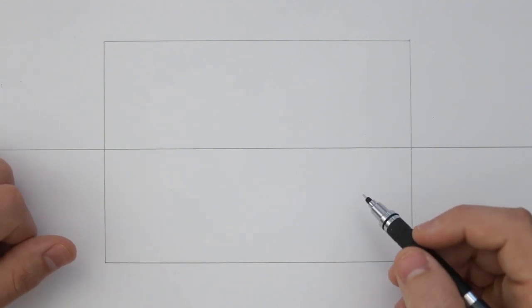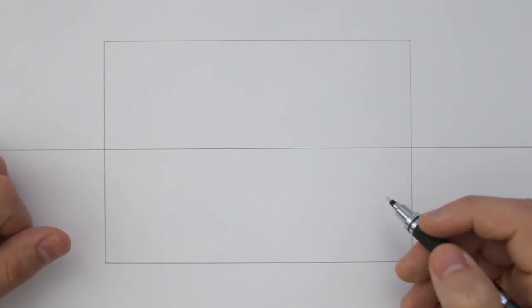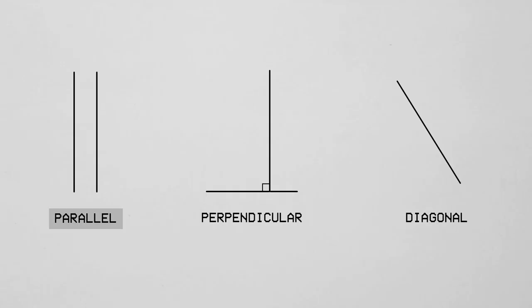Now before we go any further, let's discuss some basic terminology that you likely know already. Parallel: this is when two or more lines are alongside each other but do not meet at any point. No matter how long they are, they will never come in contact or cross each other.